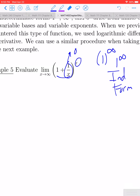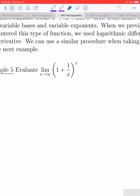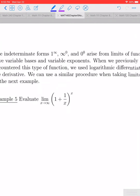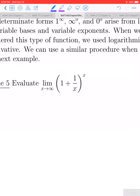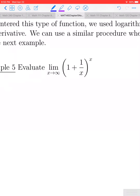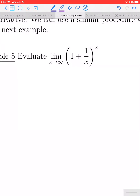It doesn't tell us whether or not a limit exists, so we're going to have to do something else. The approach, whenever you end up with one of these three types of limits, is to do the following: let's suppose that the limit would exist, and let's call it equal to y.